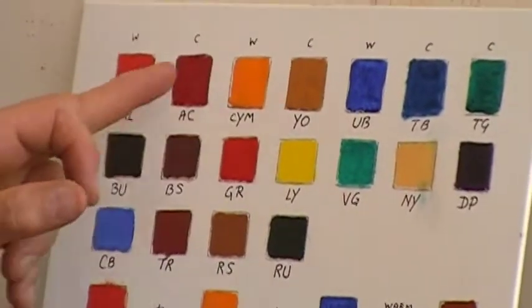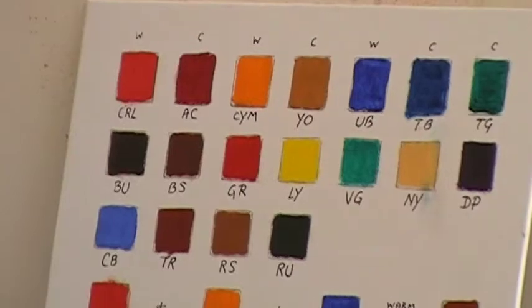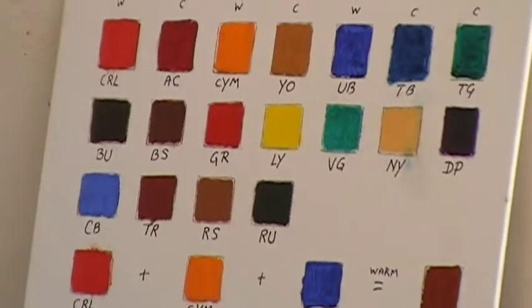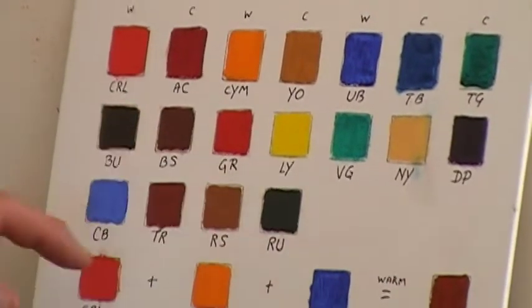Now I also have some secondary colors here that some of these it's actually cheaper to buy them than to mix them. For instance, all the earth tones, the browns - burnt umber, burnt sienna...